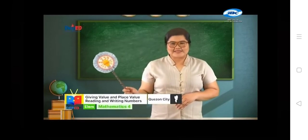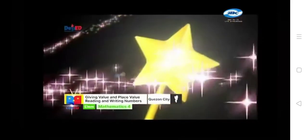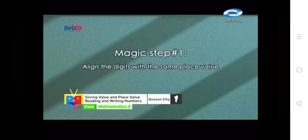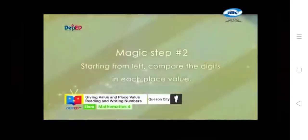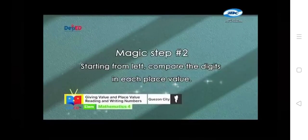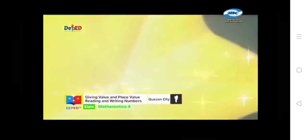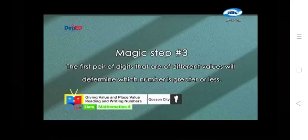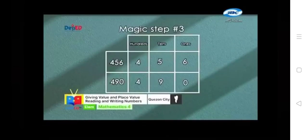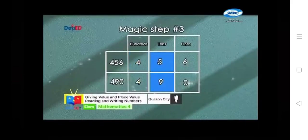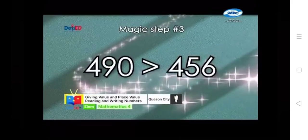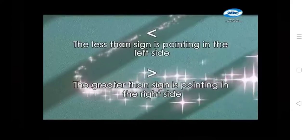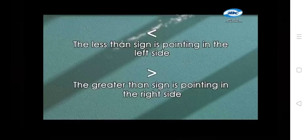There are three magical steps in comparing two numbers. Magic step number one: align the digits with the same place value. Magic step number two: starting from the left, compare the digits in each place value. Magic step number three: the first pair of digits that are of different values will determine which number is greater or less. For example, study the table. The numbers have the same digit on the hundreds place. On the tens place, nine is bigger than five. Therefore, 490 is greater than 456. Let us review the symbols in comparing numbers. The less than sign is pointing to the left side and the greater than sign is pointing to the right side.